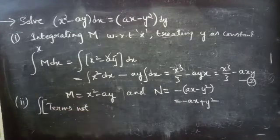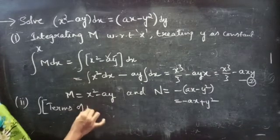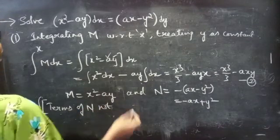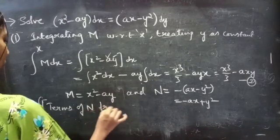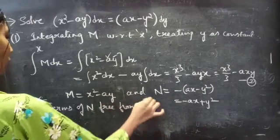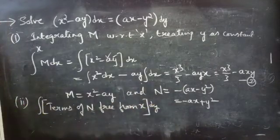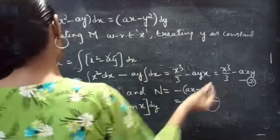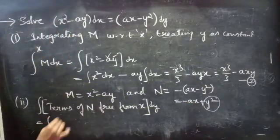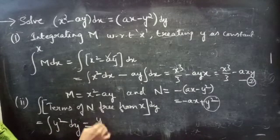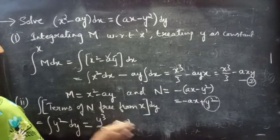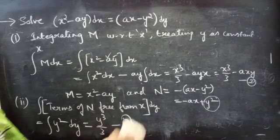Next, we find the terms of N that are free from x. The only term free from x is y squared. So integral of y squared dy equals y cubed by 3. Consider this as equation 3.